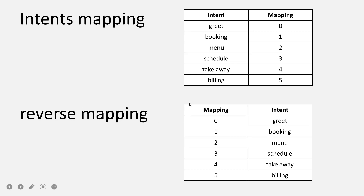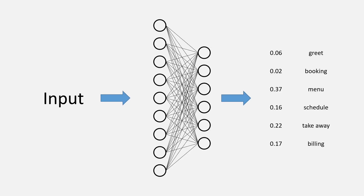Reverse mapping is basically the reverse of this — the mapping number is on the left-hand side and the intent is on the right-hand side. So this is a dictionary where in intents mapping the intents are the keys and numbers are the values, and in reverse mapping the numbers are the keys and intents are the values. Reverse mapping will be used during inference time. Right now we will be using intents mapping — so wherever we have an intent we will write zero for greet, one for booking, and so on.